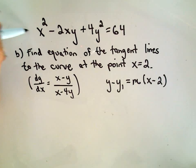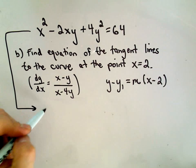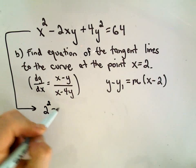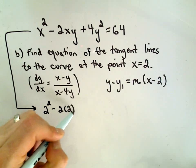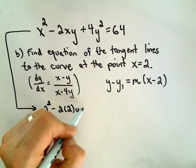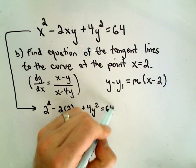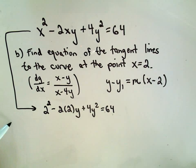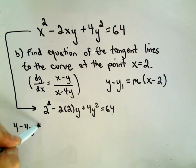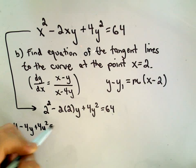Okay, so when the x coordinate is 2, so the things we're missing really are the y coordinates. If I plug in x equals 2, I get 2 squared minus 2 times 2y plus 4y squared equals 64. So it looks like we get, we're going to get 4 minus 4y plus 4y squared equals 64.